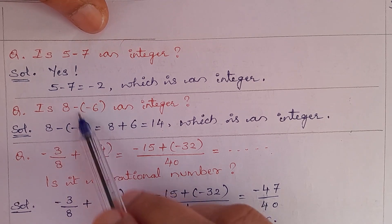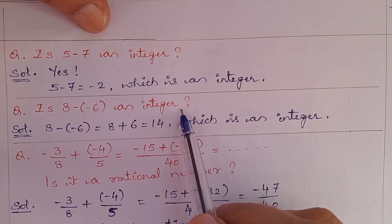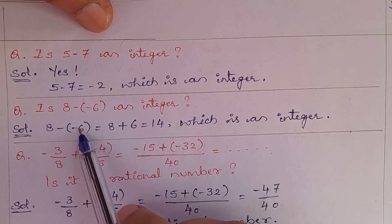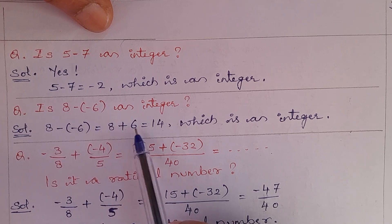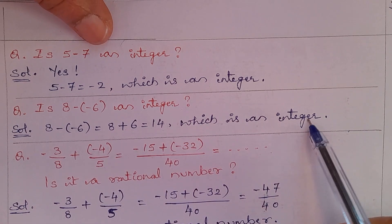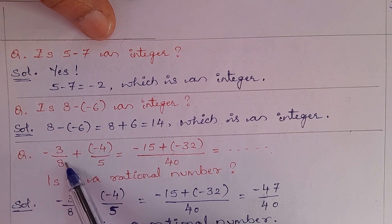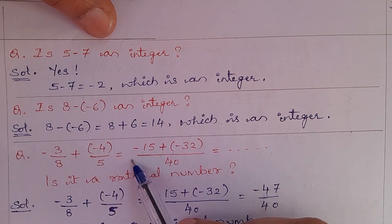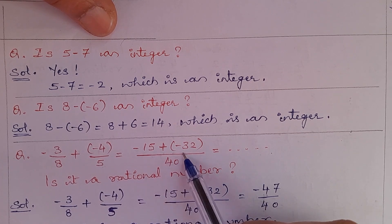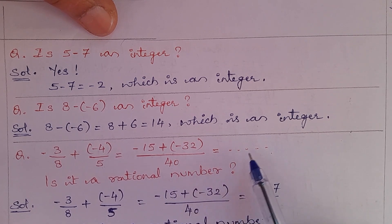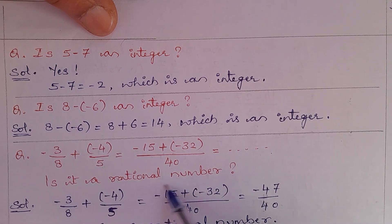Is 8 − (−6) an integer? Yes, it is an integer. 8 minus minus 6 becomes 8 plus 6, which is 14 — an integer. Now consider: (−3/8) + (−4/5) = (−15 + −32) / 40. Is this an integer?